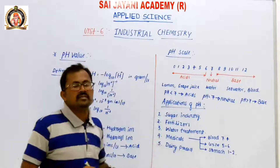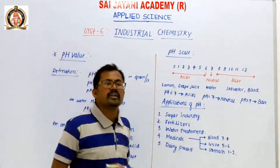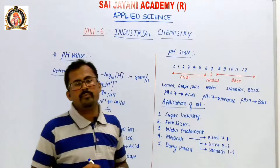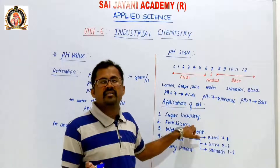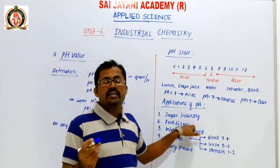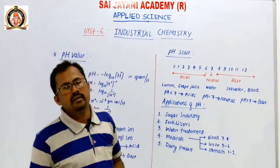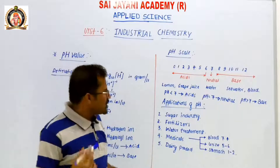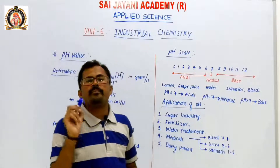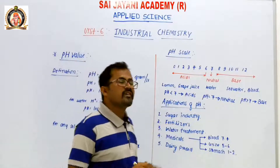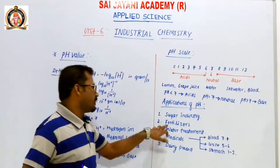Next application: fertilizers. For crop growth, fertilizers depend on pH value, which is very important. We have to choose a proper pH value in the case of fertilizers for all types of crops to achieve better yielding models. So we must maintain the proper pH value for crops and water.